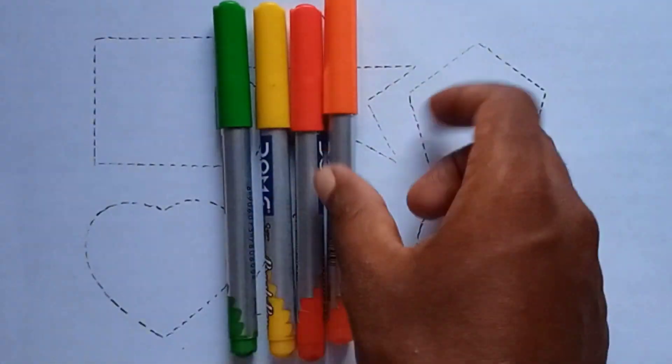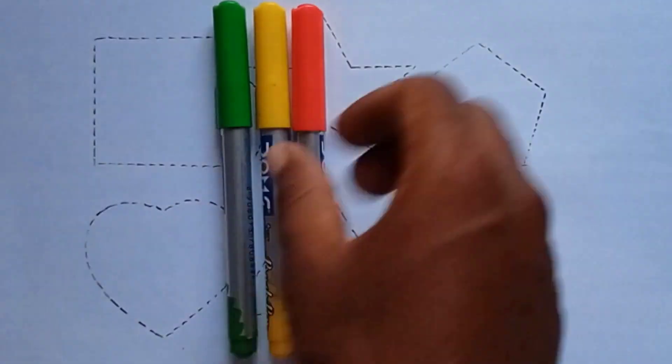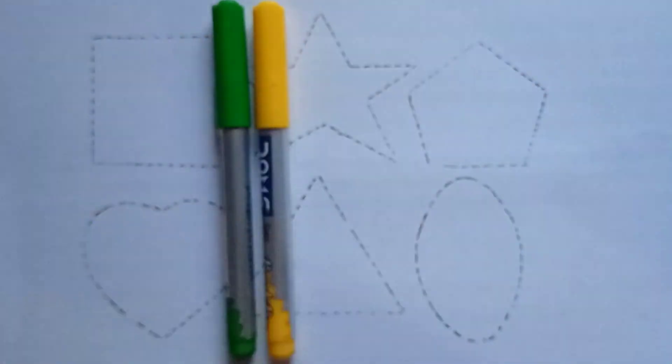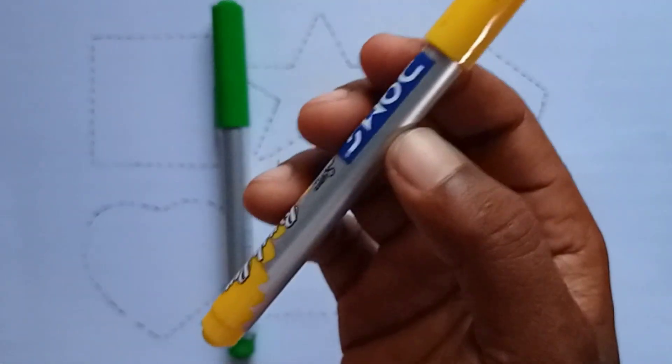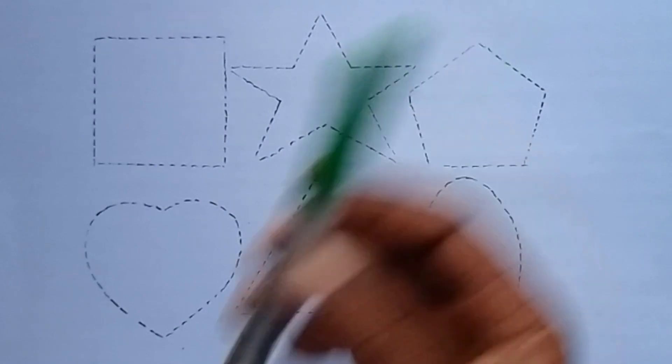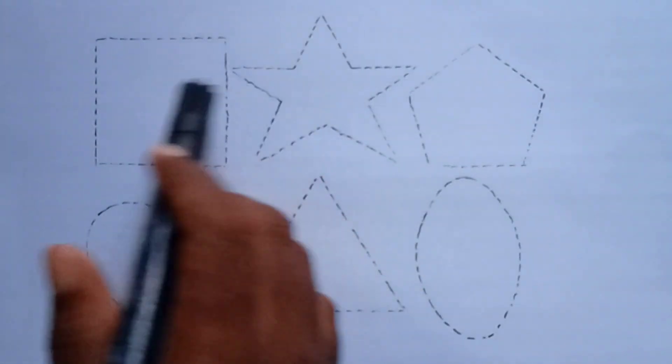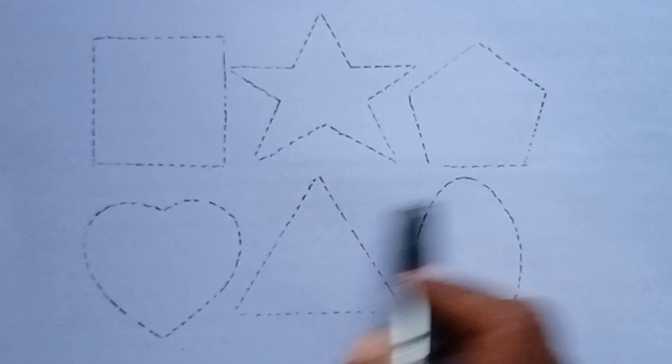Pink color, orange color, red color, yellow color, and green color. Hello kids, let's draw 2D shapes. This is our 2D shapes.